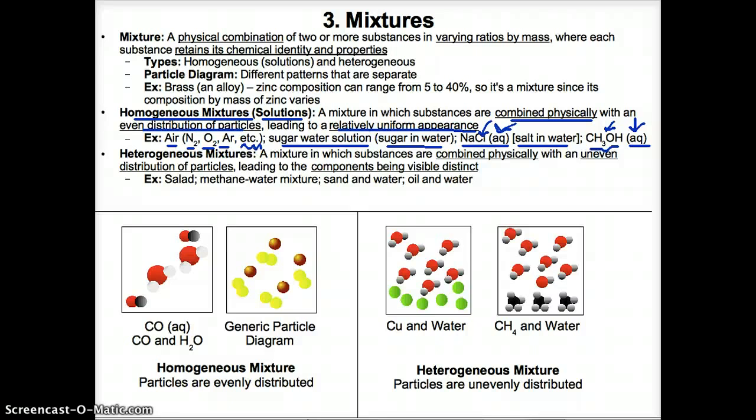Homogeneous mixture particle diagrams are represented by different substances — elements and/or compounds — physically combined but visibly separate. How you know it's homogeneous rather than heterogeneous is that the particles are evenly distributed or almost paired up in a one-to-one ratio. In this first diagram, the water molecule — one red oxygen atom attached to two white hydrogen atoms — and the carbon monoxide molecule — one red oxygen attached to one black carbon atom — consist of different patterns that are separate, making them a mixture. They're specifically homogeneous because the particles are distributed evenly in an almost one-to-one ratio.